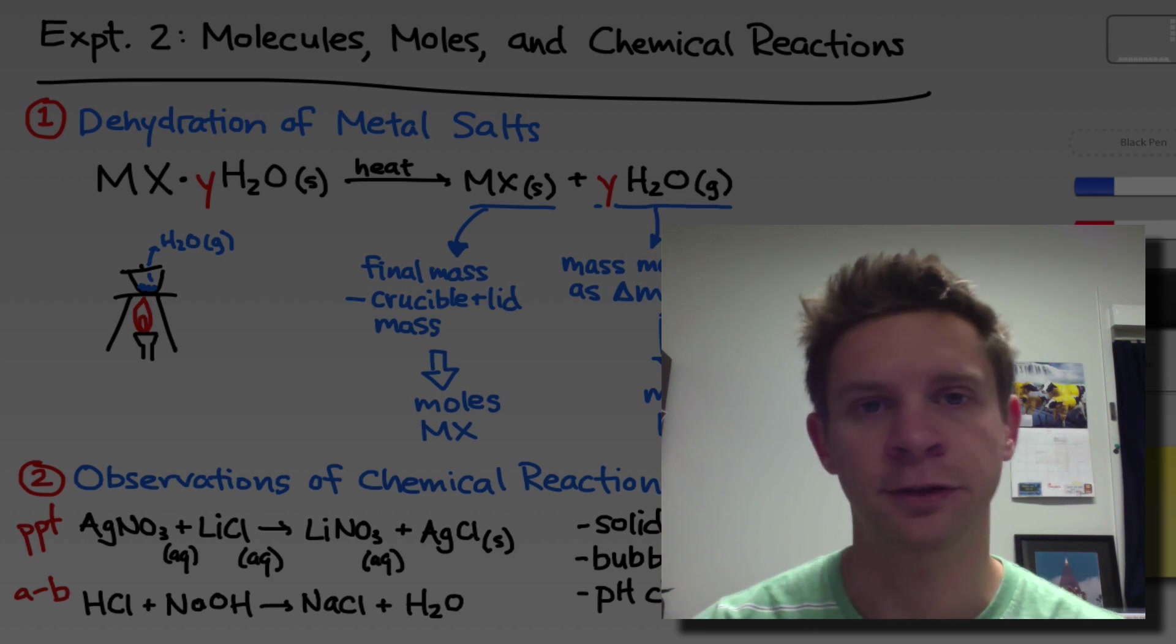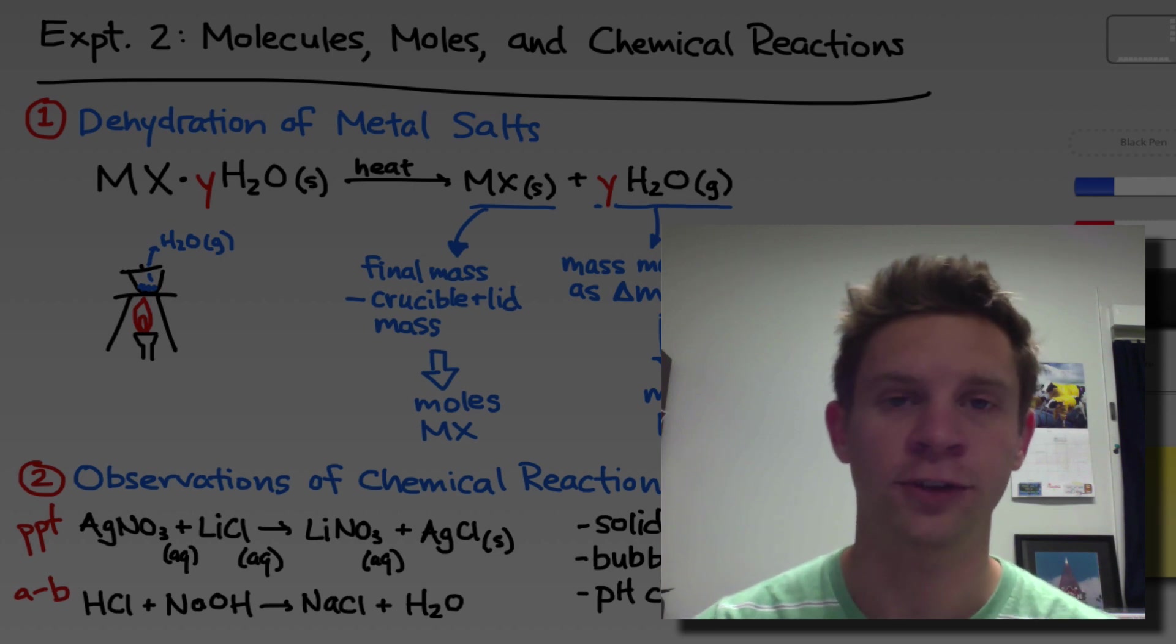In the first part of the experiment, we will use a dehydration reaction to characterize an unknown metal salt. Specifically, we'll remove the waters of hydration from the salt and use the mass loss to calculate the number of moles of water per mole of salt ions.